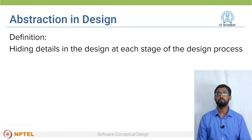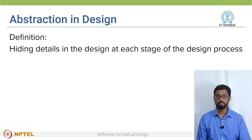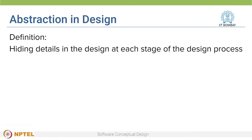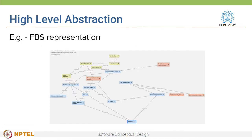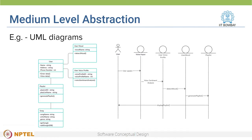Abstraction is a way of hiding details in the design at each stage of the design process. In week 2, we created an FBS graph which expands on the function, structure, and behavior of the design solution. It is an example of a high-level abstraction of the system. We then add more and more details to the solution design. In week 3, we were introduced to UML diagrams, which correspond to the medium-level abstraction of the system.